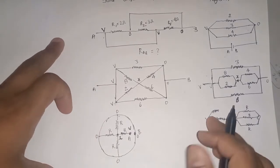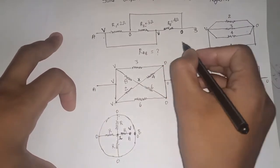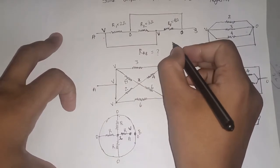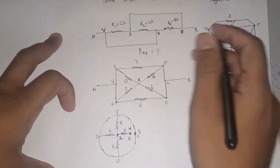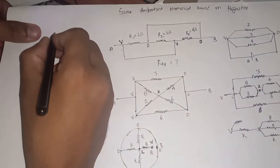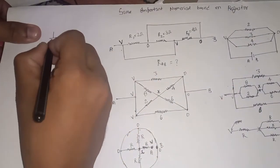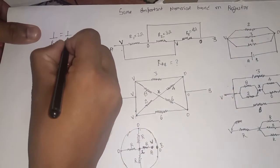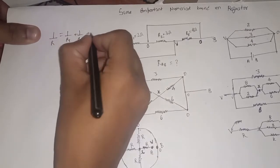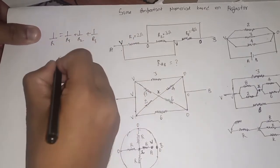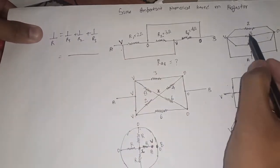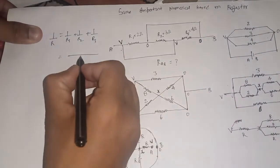In parallel combination, if I get a solution, I will see that 1 upon R1 plus 1 upon R2 plus 1 upon R3. This means R1, R2, R3 — LCM of 2, 3, 4 — here we can write 6.